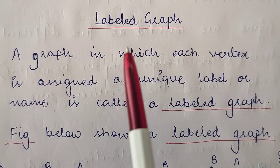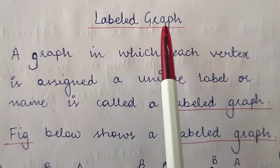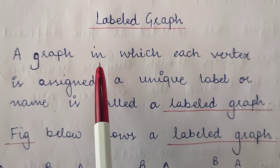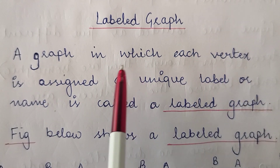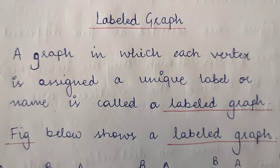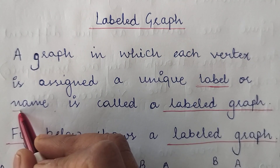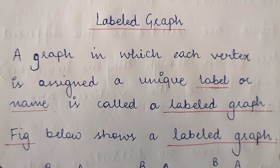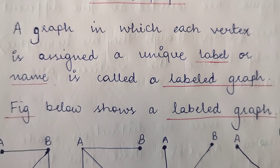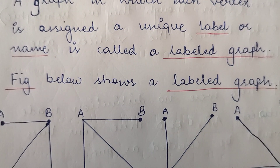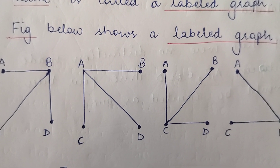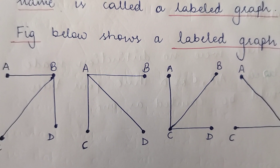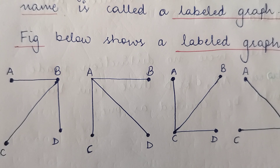Hi everyone, today we are going to study labeled graphs. A graph in which each vertex is assigned a unique label or a name is called a labeled graph. So till now we have seen graphs in which vertices are not assigned any names — they are just random vertices. But if a vertex is assigned a unique name or a unique label, then such a graph having such labeled vertices is called a labeled graph.